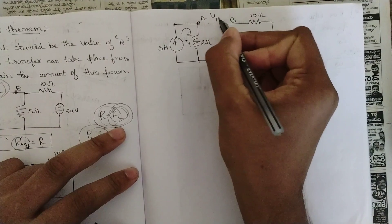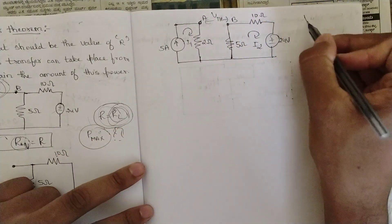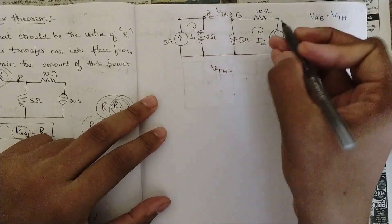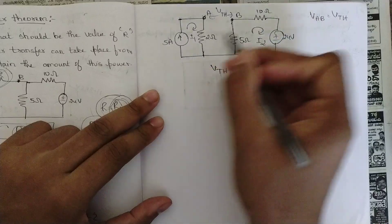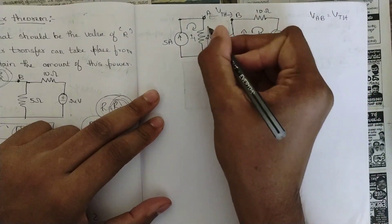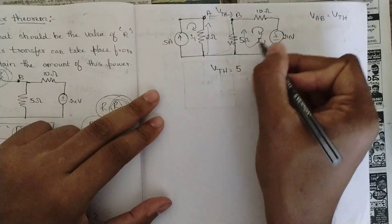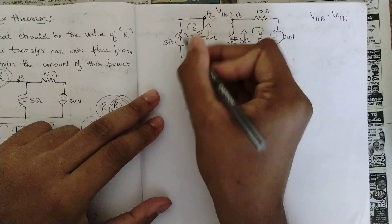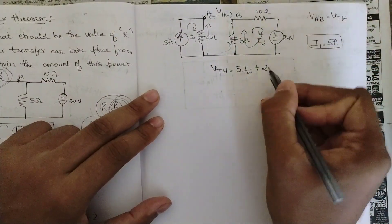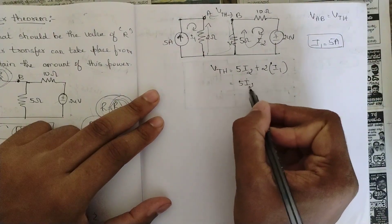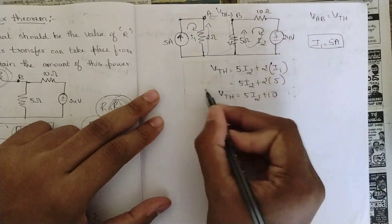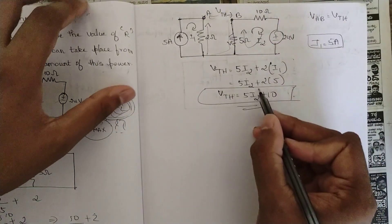The Thevenin voltage V_AB equals Vth. Tracing from B to A, we move in the direction opposite to the branch, so we write the Vth equation as: Vth = 5·I2 + 2·I1. Since there is a current source in the circuit, I1 = 5A directly. Substituting: Vth = 5·I2 + 2×5 = 5·I2 + 10.